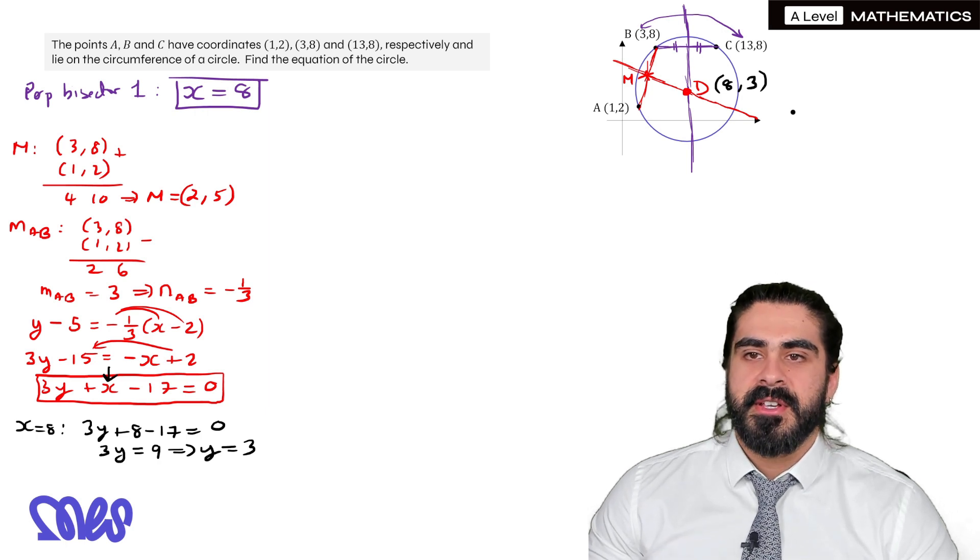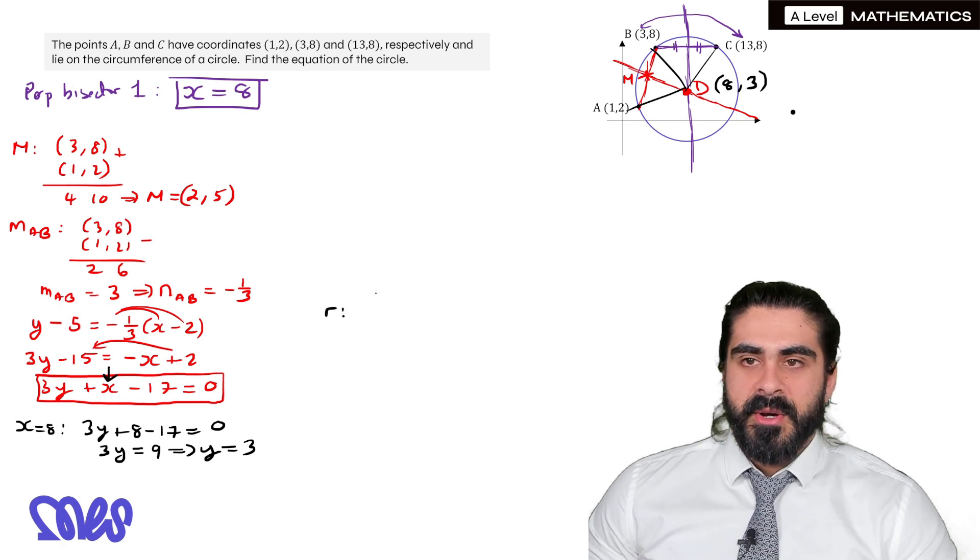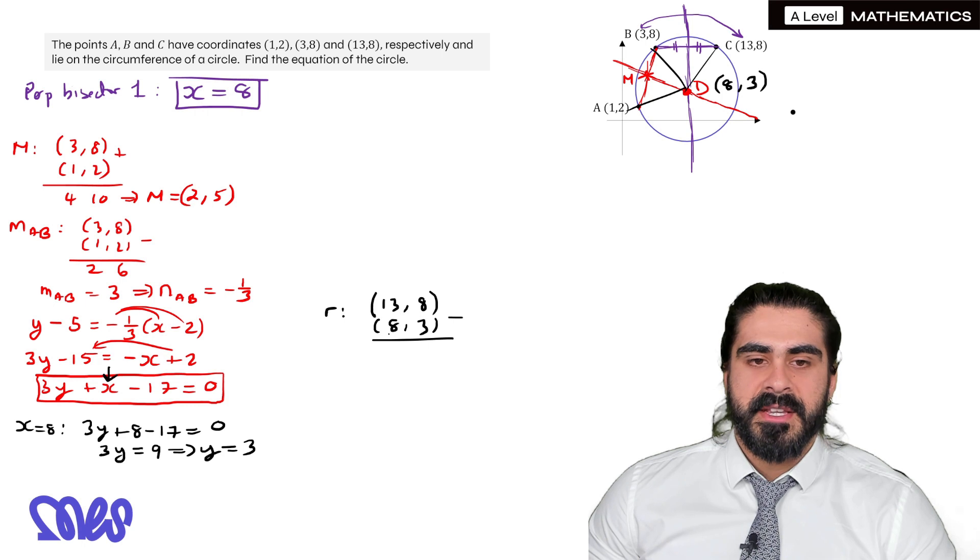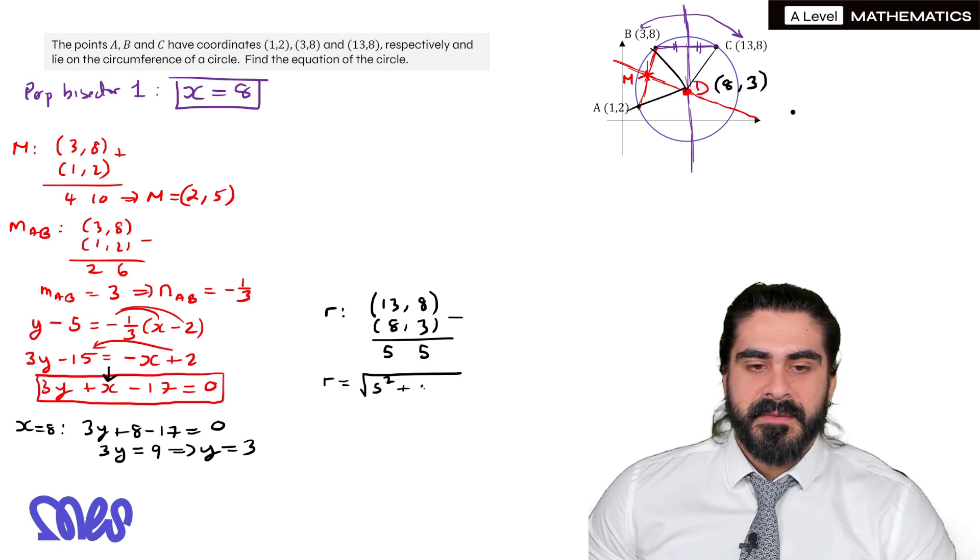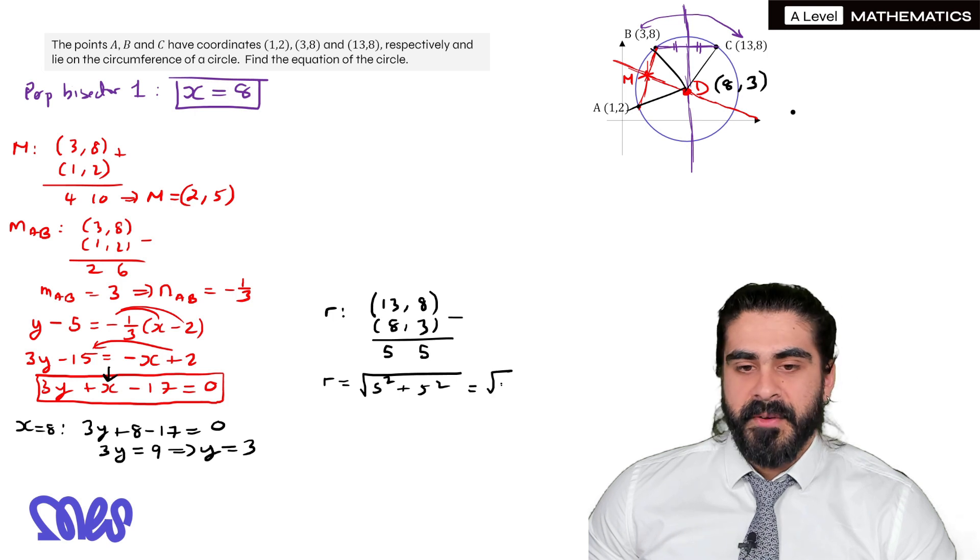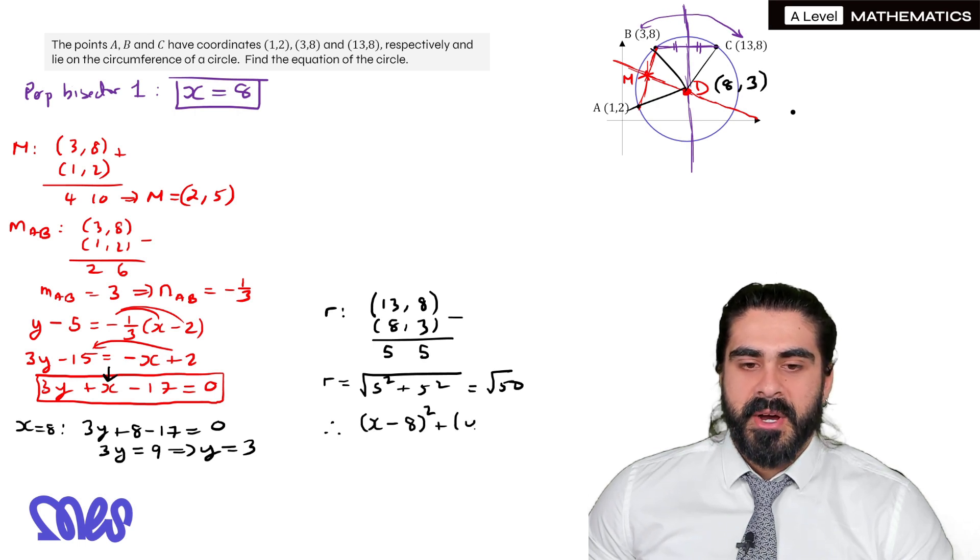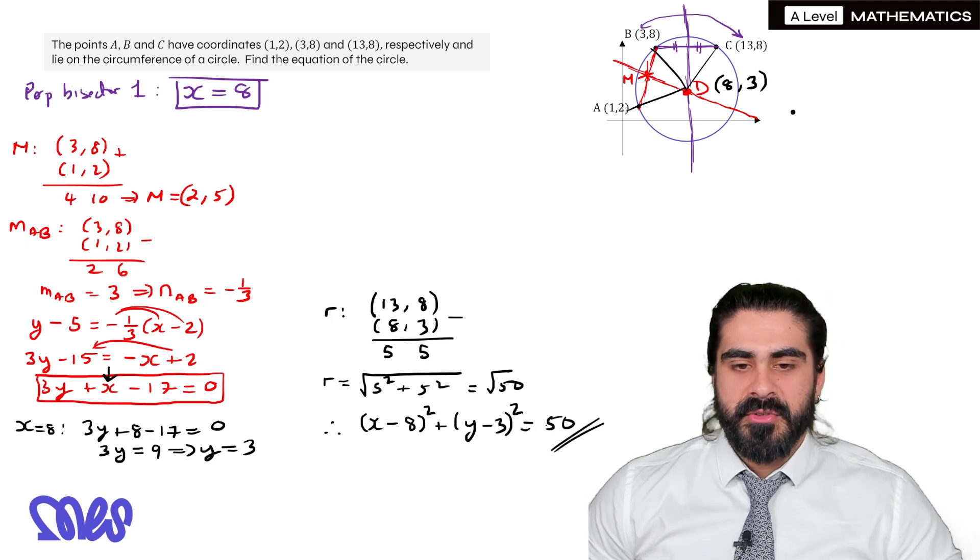The last thing we need to do is calculate the radius by working out the distance between D and any of the points on the circumference. We're going to take away the coordinates, let's use 13, 8 and 8, 3. 13 minus 8 is 5, 8 minus 3 is also 5. So the radius is the root of 5 squared plus 5 squared which is root 50. Therefore, the equation of the circle is x minus 8 squared plus y minus 3 squared equals 50. And this is our solution to the problem.